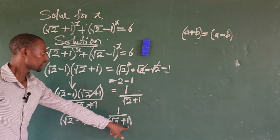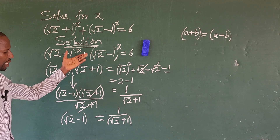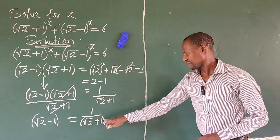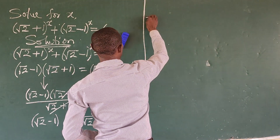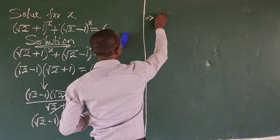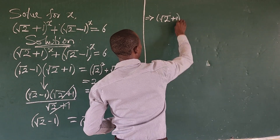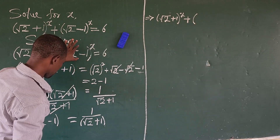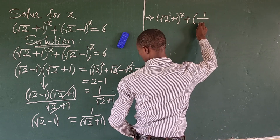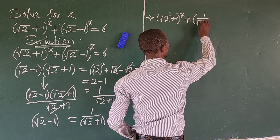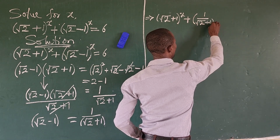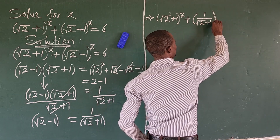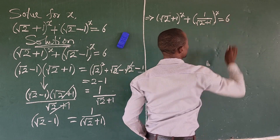Let's go ahead and rewrite our original equation using this result. This implies that: (√2 + 1)^x plus bracket [1/(√2 + 1)]^x equals 6.